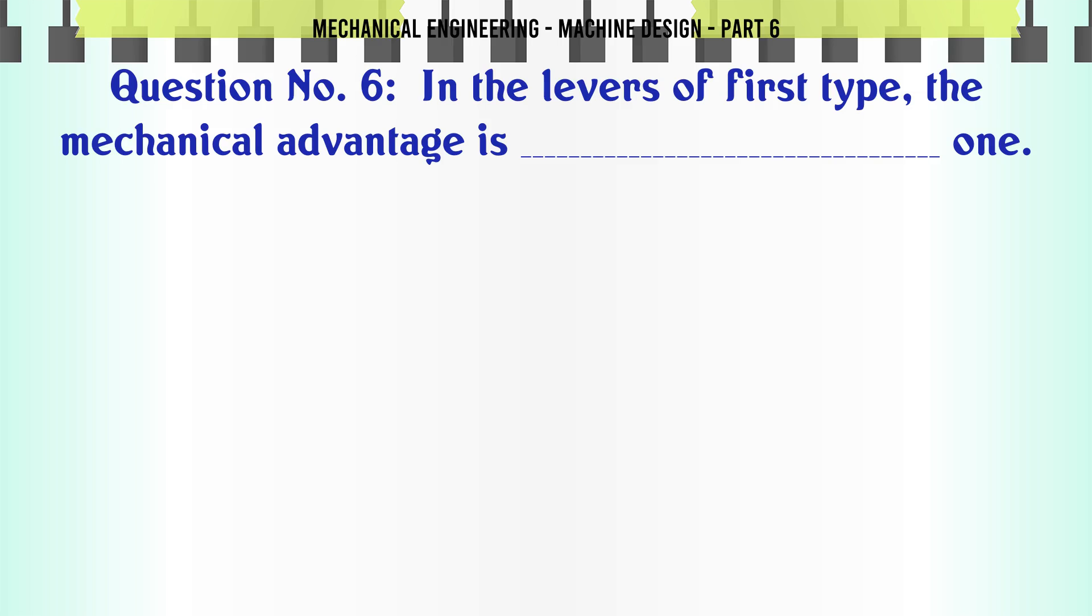In the levers of first type the mechanical advantage is: A) less than 1, B) equal to 1, C) more than 1. The correct answer is more than 1.